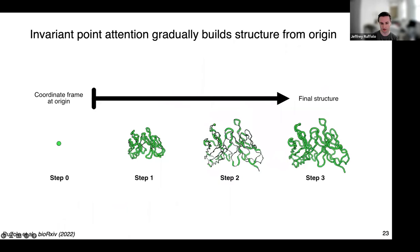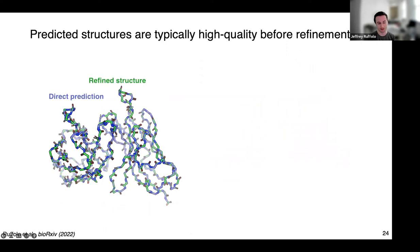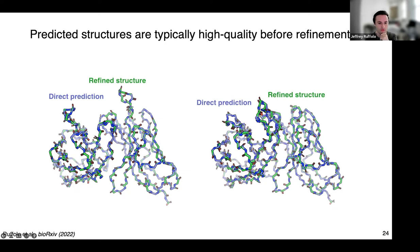Once we have the final structure from the model, we refine it with Rosetta to remove non-idealities. This step makes only small changes — for most structures there's really no change. You might see small adjustments in the H3 loop, fixing unrealistic torsion angles and bond lengths. The cases where this is really necessary are longer H3 loops, where you can see clashes — atoms too close together — that Rosetta fixes to produce a more realistic structure prediction.